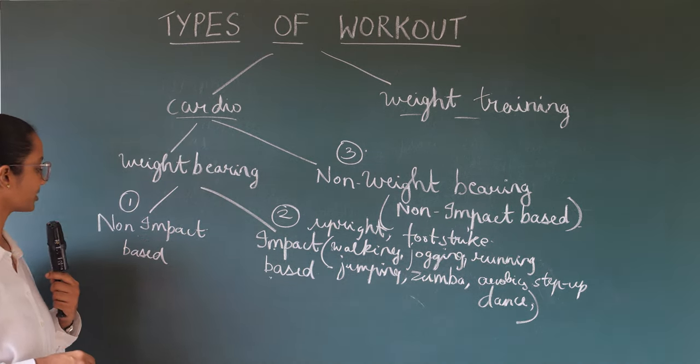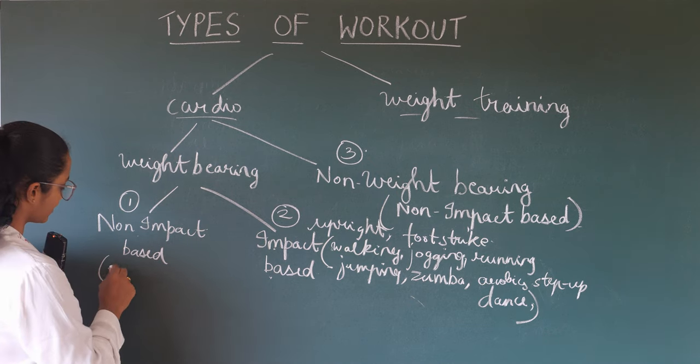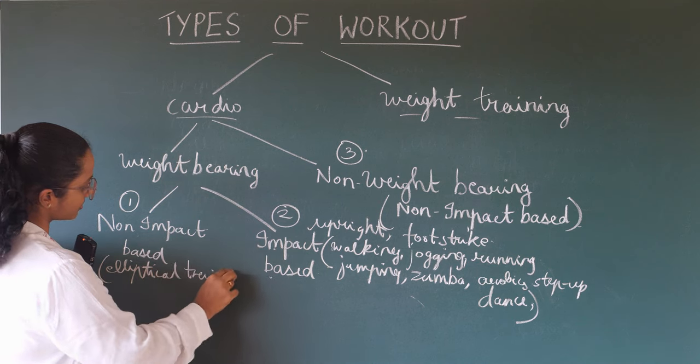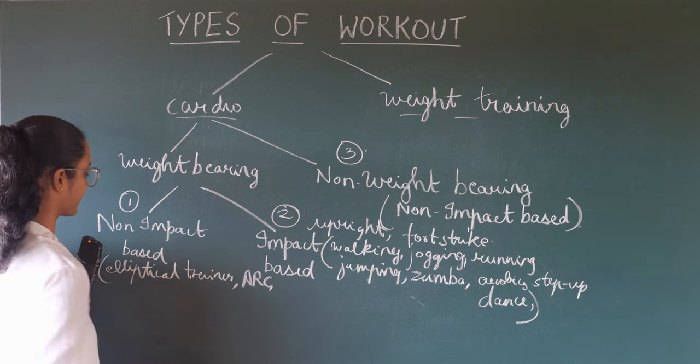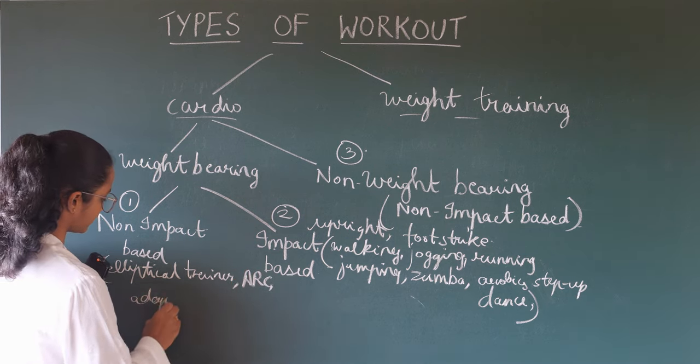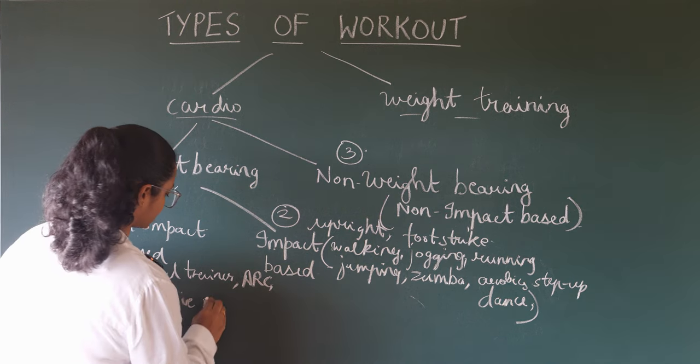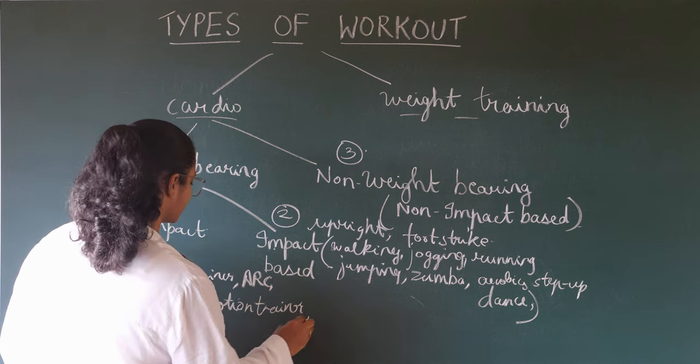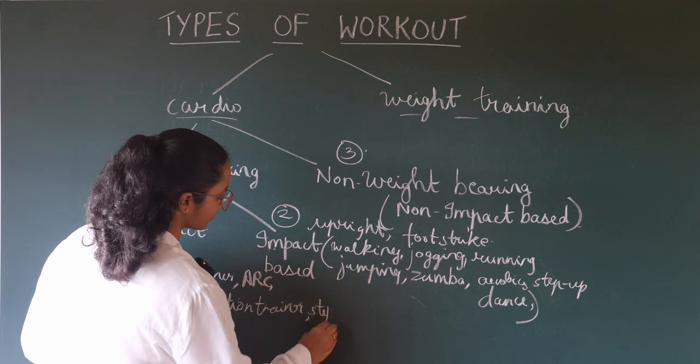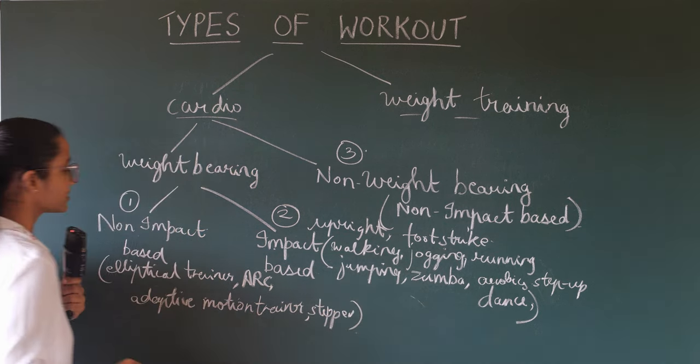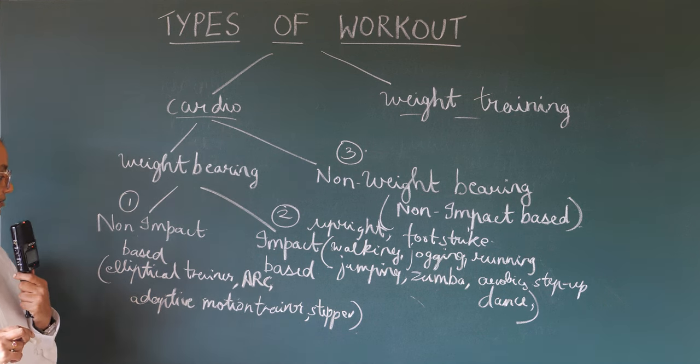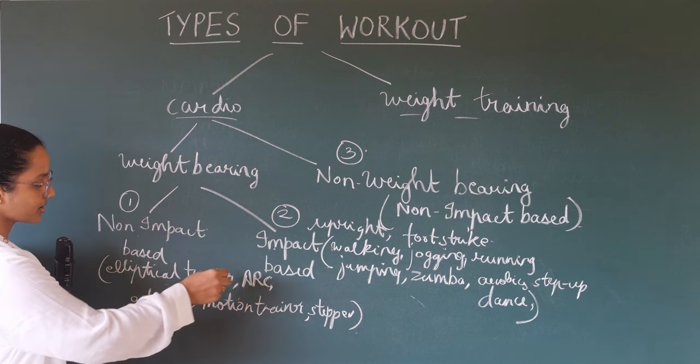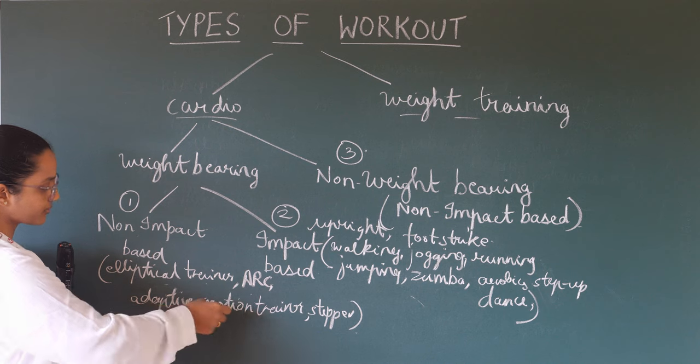In non-impact based weight bearing, it is elliptical trainer, arc trainer, and stepper. If you've visited the gym and seen the cardio section, you will see elliptical trainer, arc trainer, adaptive motion trainer, and stepper.